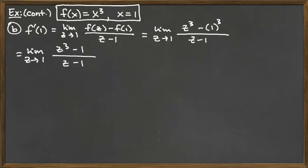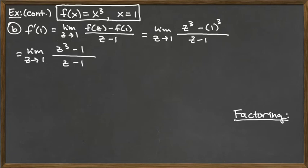Now we have to tackle the ability to factor. We cannot cancel 1's and z's because of the subtraction signs on both the top and bottom — that doesn't allow us to reduce. To reduce a fraction you need factors that are multiplied by other things on both top and bottom. So what we need to know is how to factor. What we have on the top is a difference of cubes.